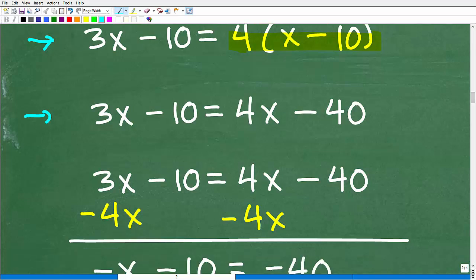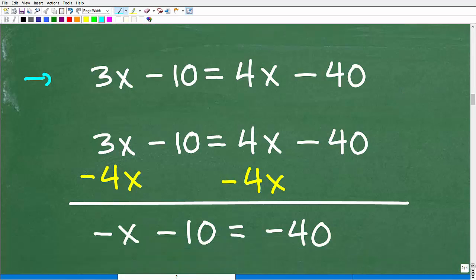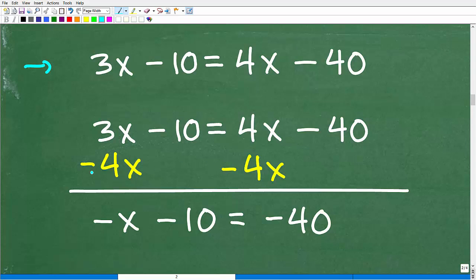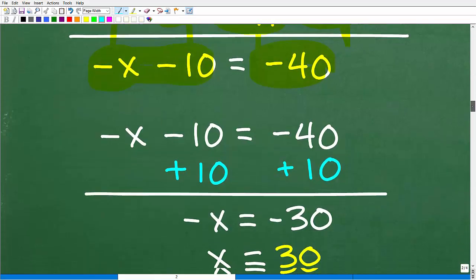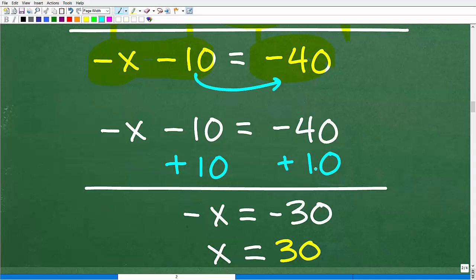Now I'm going to subtract 4X from both sides of the equation. I'm getting all the variables to the left and all our numbers to the right. Whatever you do on one side of the equation, you can do whatever you want as long as you do it equally to both sides. Now I'm going to add down in a column manner. 3X minus 4X is negative X. Negative 10 plus nothing is negative 10. So I have negative X minus 10 on the left-hand side. Positive 4X minus 4X is 0, and negative 40 plus 0 is negative 40. Now let's take the next step, which is to move our negative 10 over to the other side. We're going to add 10 to both sides of the equation. Negative X plus nothing is negative X. Negative 10 plus positive 10 is 0. Negative 40 plus 10 is negative 30.